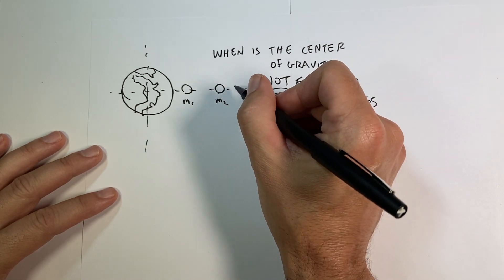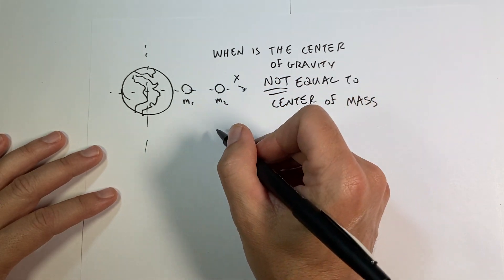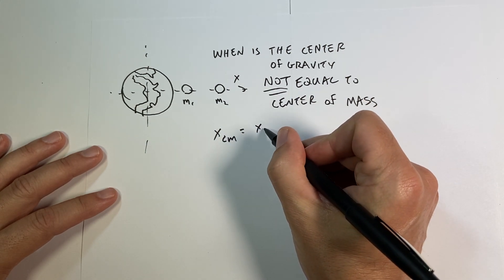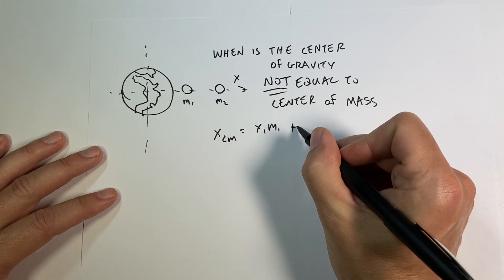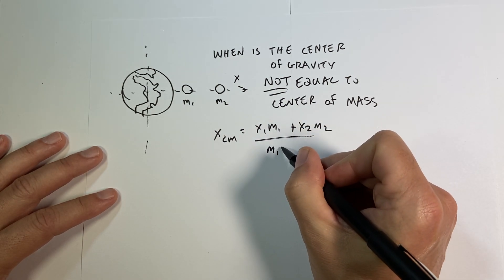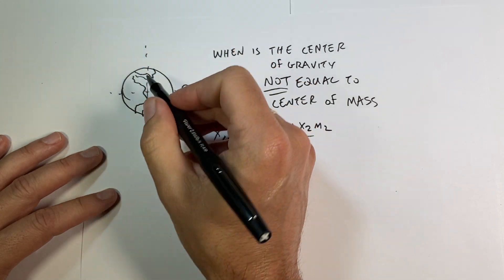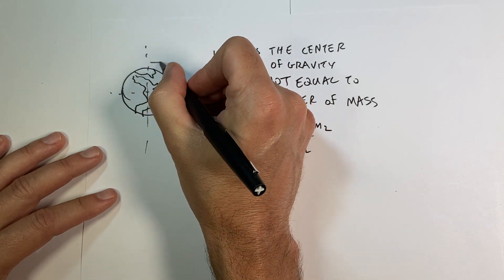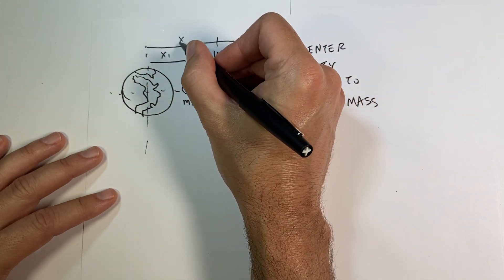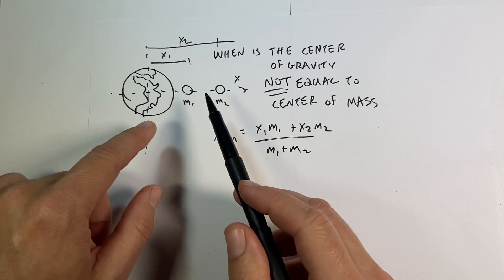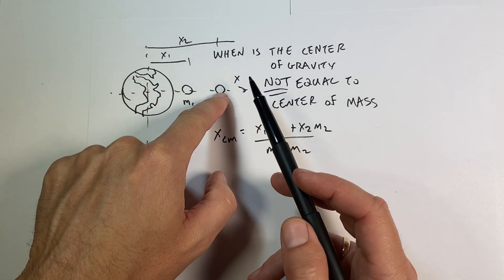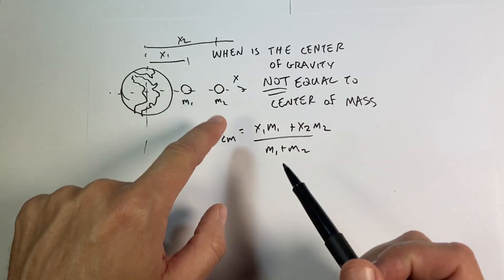So in one dimension, if I call this the x-direction, then the x-center of mass for these two points is going to be x1*m1 plus x2*m2 over m1 plus m2. This is x1 and this is x2. I just take this mass, multiply it by its x position, take this mass, multiply it by its x position, and together divide by the total mass.